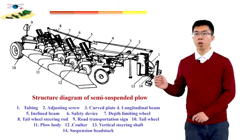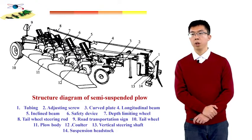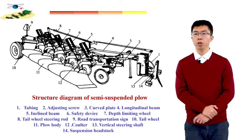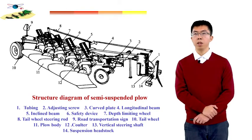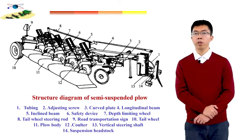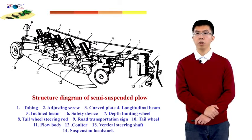Now let's learn the structural diagram of the semi-suspended plow. Number one is the tubing, number two is the adjusting screw, number three is the curved plate, number four is the longitudinal beam, number five is the inclined beam, number six is the safety device, number seven is the depth limiting wheel, number eight is the tail wheel steering rod, number nine is the road transportation sign, number ten is the tail wheel, number eleven is the plow body — the most important part — number twelve is the coulter, number thirteen is the vertical steering shaft, and number fourteen is the suspension headstock.